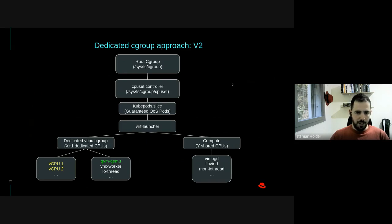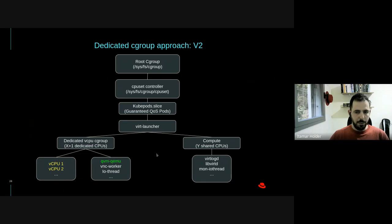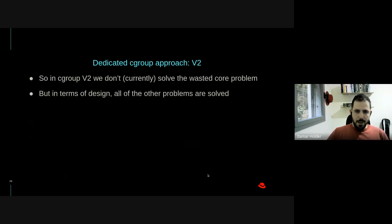Here's how it looks in Cgroup v2: we have a dedicated vCPU Cgroup with x dedicated cores for the vCPUs, and another dedicated core for all other threads living under the KVM-QEMU process. All other threads of other processes remain in the compute Cgroup. In v2 we don't yet solve the wasted core problem, but it's much better in terms of design and addressing the other problems mentioned.